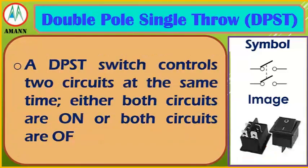Double Pole Single Throw (DPST) Switch: a DPST switch controls two circuits at the same time — either both circuits are on or both circuits are off.